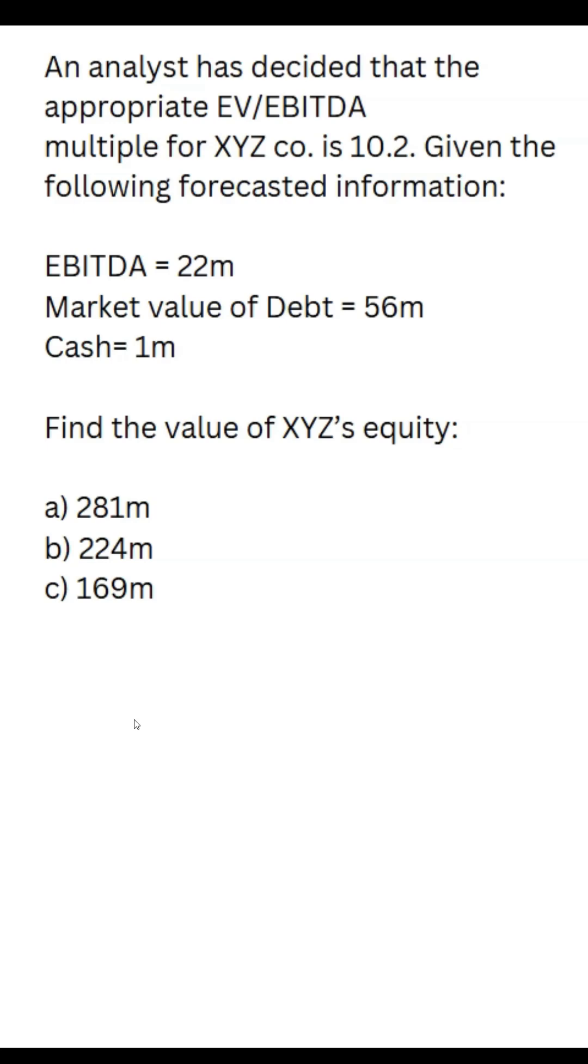An analyst has decided that the appropriate EV/EBITDA multiple for XYZ Co. is 10.2. Given the following forecasted information: EBITDA 22 million, market value of debt 56 million, and cash 1 million, find the value of XYZ's equity.